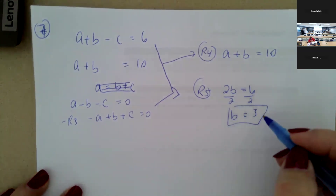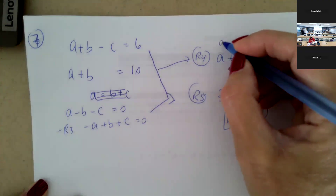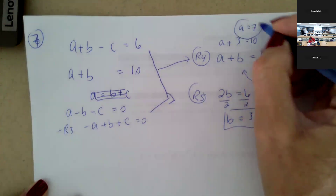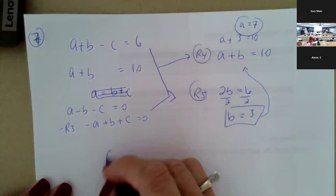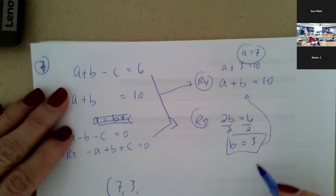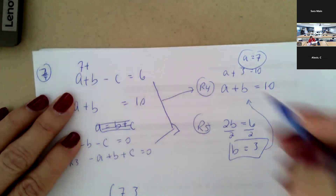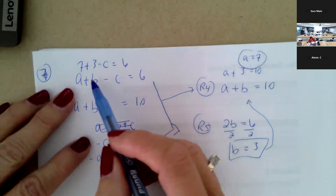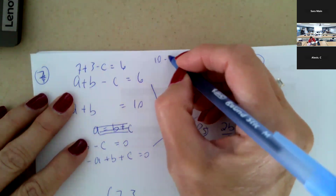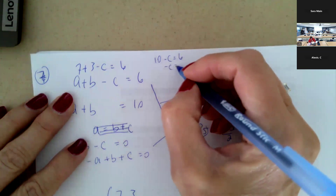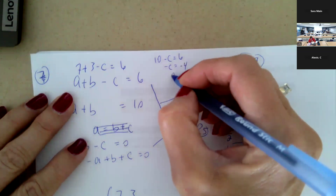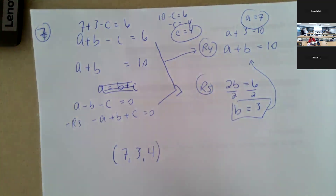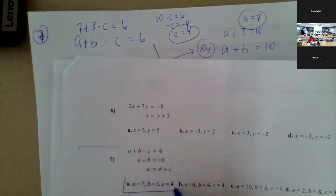Now that I know b equals three, I can go back and substitute: a plus three equals ten, so a must equal seven. Then putting a equals seven and b equals three into row one, I get ten minus c equals six, so subtracting ten gives negative c equals negative four, so c equals positive four. So seven, three, and four — letter A is our solution.